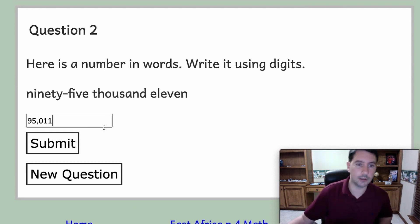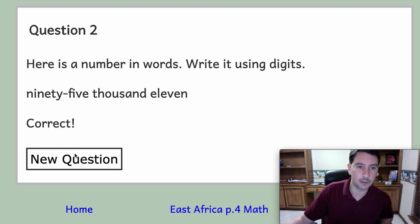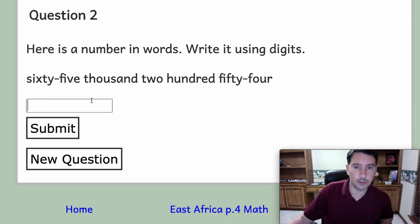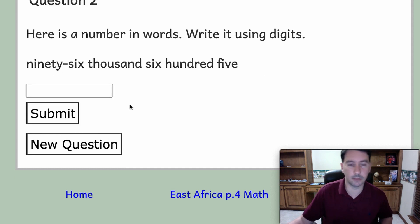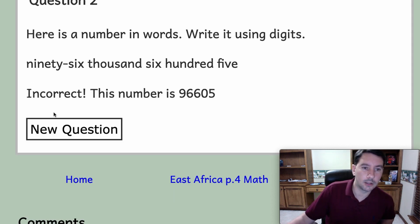We're going to do 95,000, so thousand means comma, and then we need the number 11. Now let's see what it does if I get one of these wrong. We'll say 96,000 and it says 605, let's just say 600 so I forget the five. Submit. Incorrect, and then it shows you what the number should be.